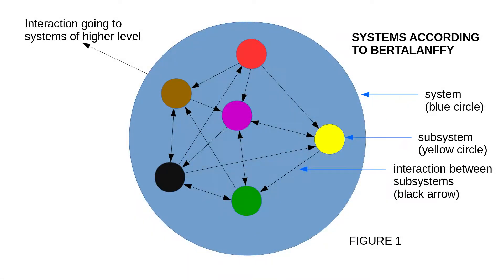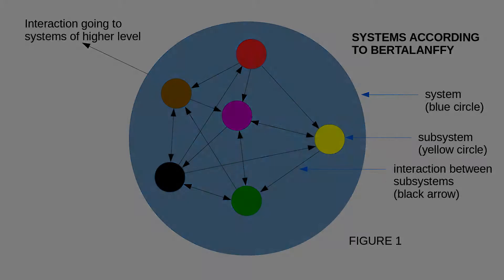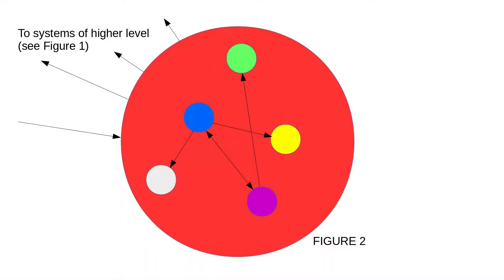The interesting thing about system theory is that when you look at any particular subsystem more closely, you will see that it is not a finite element but rather represents another system. Take a look, for example, at the subsystem drawn in red on Figure 1. On the next Figure 2, the big red circle is that small red circle from Figure 1. Inside this big red circle there are again smaller colorful circles representing subsystems. So if the big blue circle in Figure 1 represented a computer, this big red circle on Figure 2 represents the processor inside the computer, and the subsystems are the transistors inside that processor.